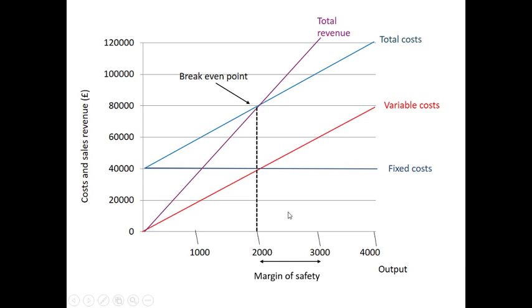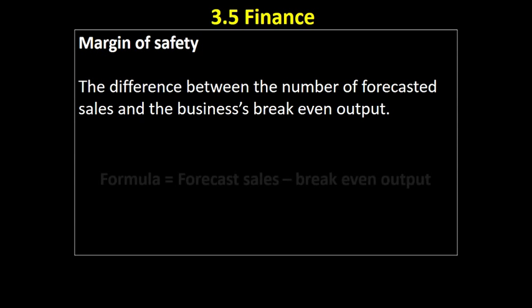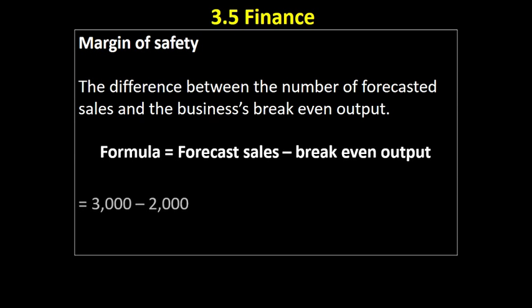You can calculate it: forecast sales 3,000, break-even output 2,000, so our margin of safety is 1,000 units. Obviously, businesses will want some margin of safety because of the unpredictable nature of sales and the potential need to discount some units.